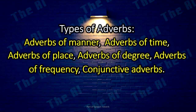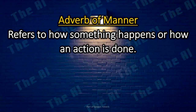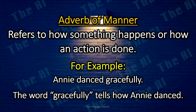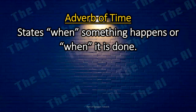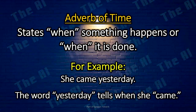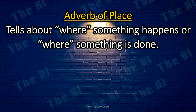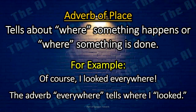The different types of adverbs are: adverbs of manner, adverbs of time, adverbs of place, adverbs of degree, adverbs of frequency, and conjunctive adverbs. Adverb of manner refers to how something happens or how an action is done. For example: Annie danced gracefully — the word gracefully tells how Annie danced. Adverb of time states when something happens. For example: She came yesterday — the word yesterday tells when she came. Adverb of place tells where something happens. For example: I looked everywhere — the adverb everywhere tells where I looked.